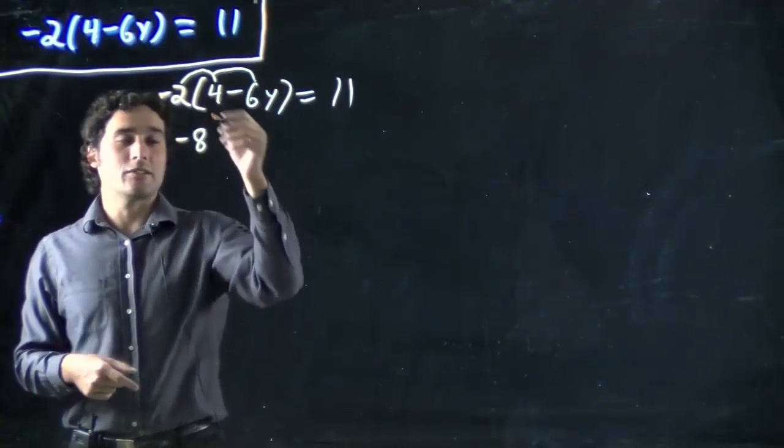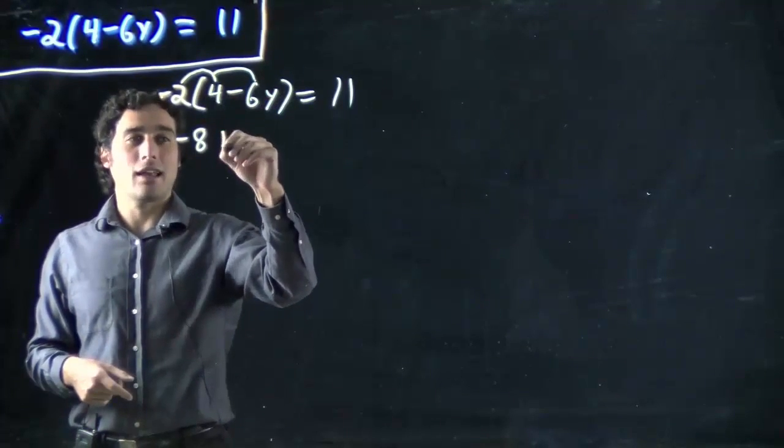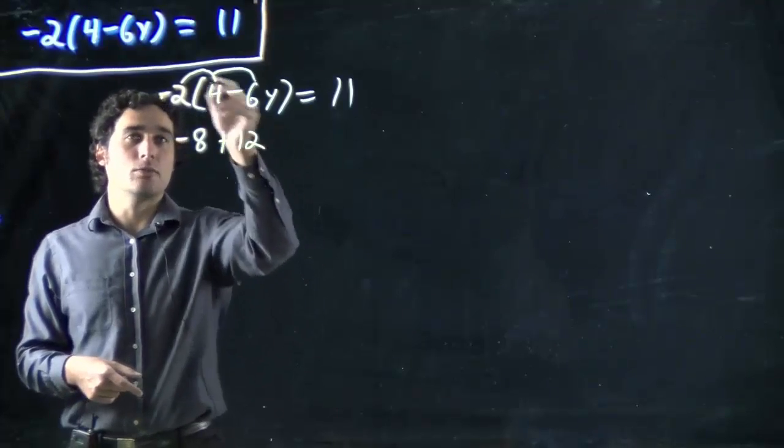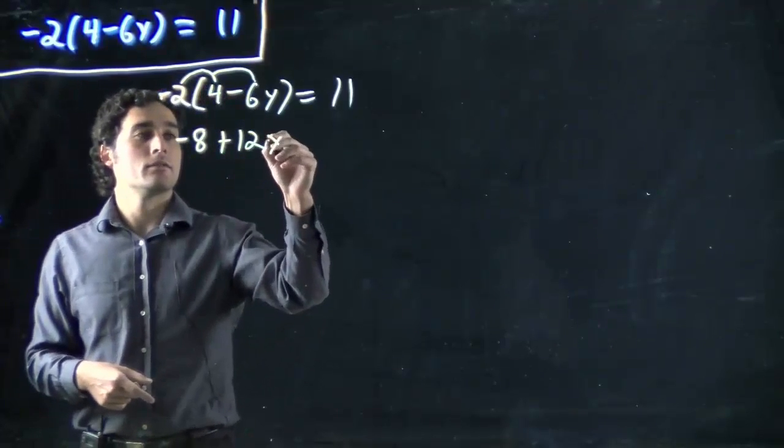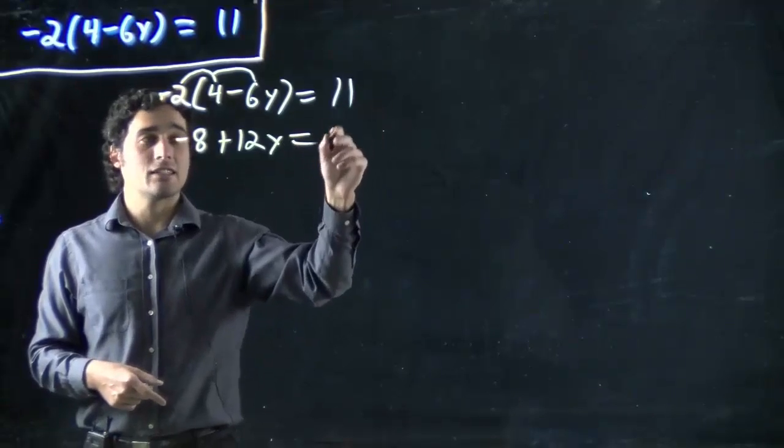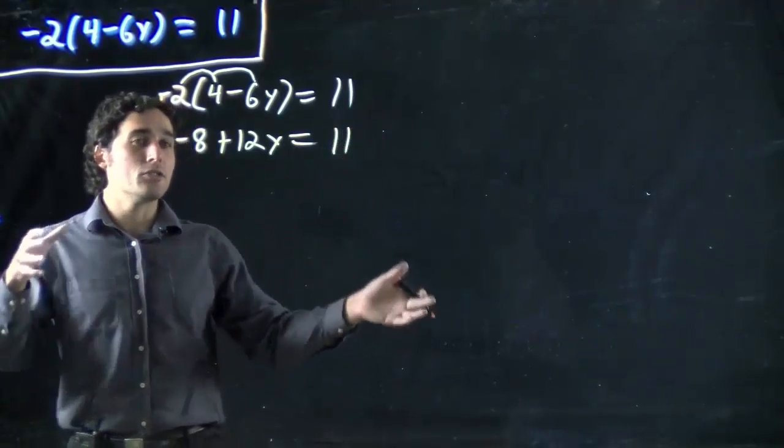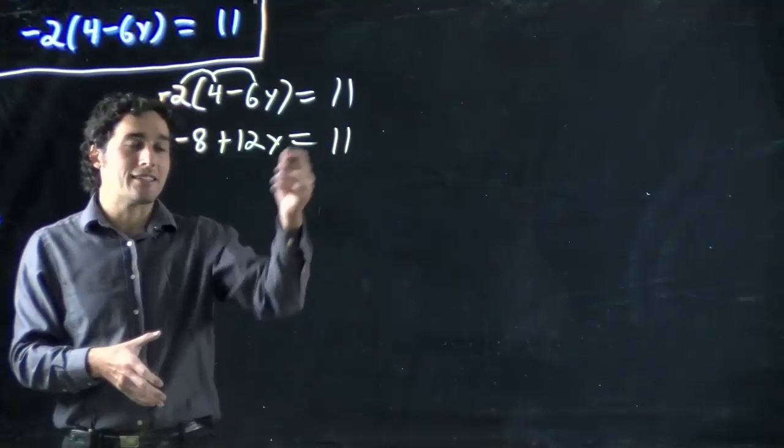Minus 6y times minus 2 becomes plus 12. Remember, 2 minuses cancel out. And this side doesn't get touched. We didn't introduce something new into the equation, so that side doesn't get touched.